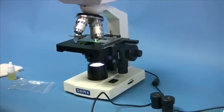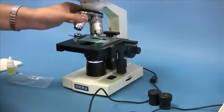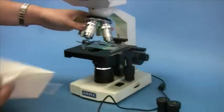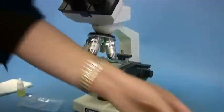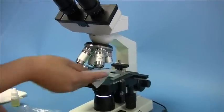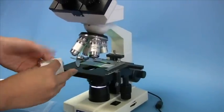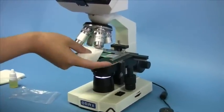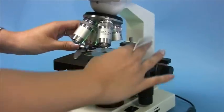Now once you're done with your observation, you need to clean the 100x objective and the slide immediately. So simply use a lens paper that is also not included in the microscope package. And clean it very gently like this. Just make sure that there's no more oil on the objective lens, and also the slide.